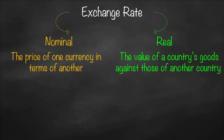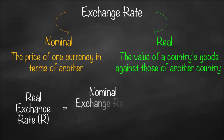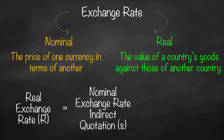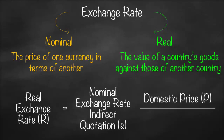Therefore, our formula for real exchange rate — let's call it R — is equal to the nominal exchange rate. In this formula, I will use indirect quotation, which is S multiplied by domestic price divided by foreign price. Why? Because with the nominal exchange rate in indirect quotation, it is foreign currency divided by domestic currency. So the foreign currency offsets the foreign price and the domestic currency offsets the domestic price. That's why if we use direct quotation, we need to swap the foreign price with the domestic price. Therefore, this is the formula we use for indirect quotation.